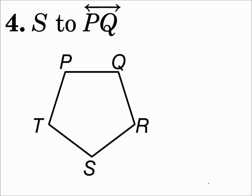Number 4: From point S to line PQ. I can draw straight there inside the shape — it goes straight to PQ, hitting it at a right angle. The distance is the line that's perpendicular to the line you're drawing to, and that's the shortest distance there is.